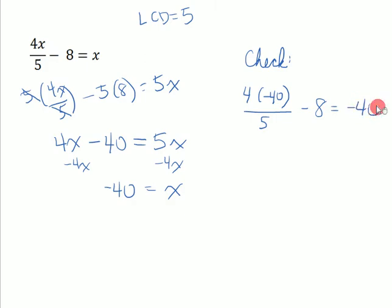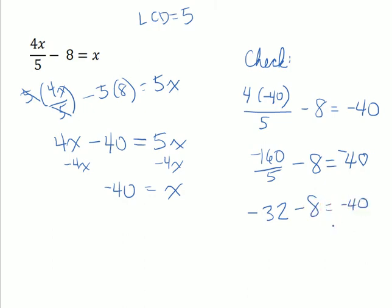We replace x with negative 40 everywhere it appears. 4 times negative 40 is negative 160. We divide negative 160 by 5. 5 into 16 divides 3 times with 1 left over, so we get negative 32 minus 8, which is indeed negative 40. So that works, and our solution is negative 40.